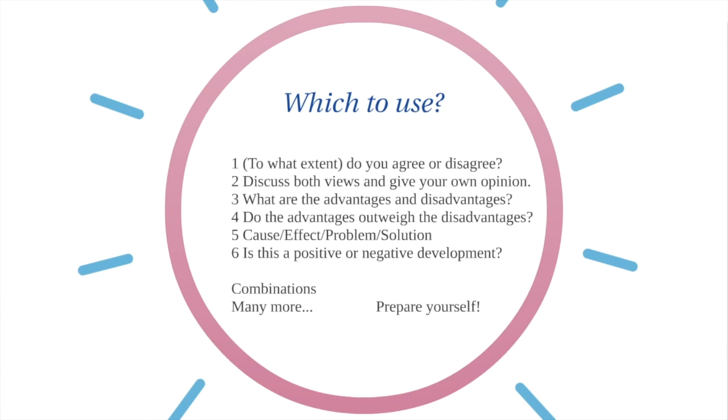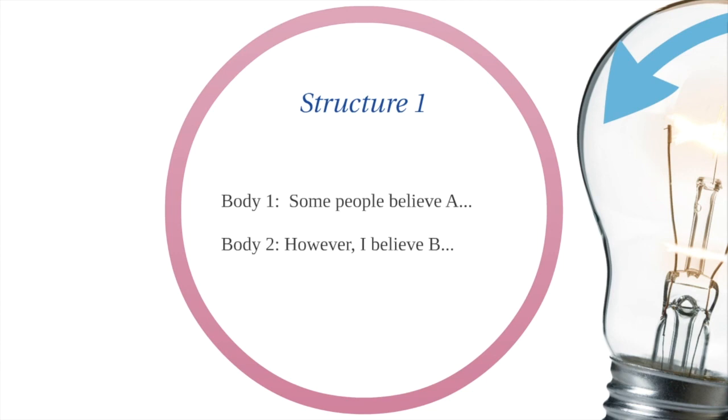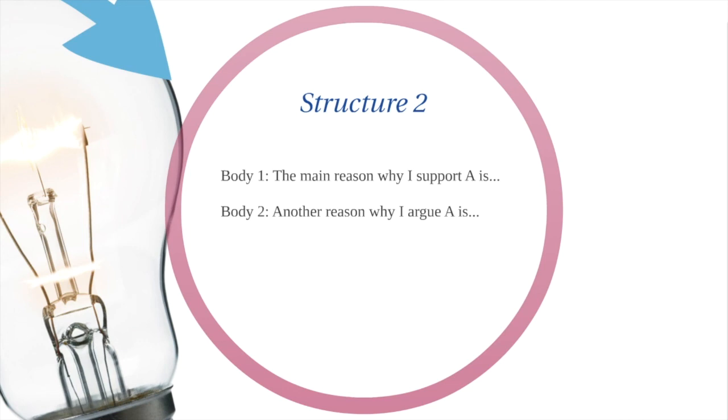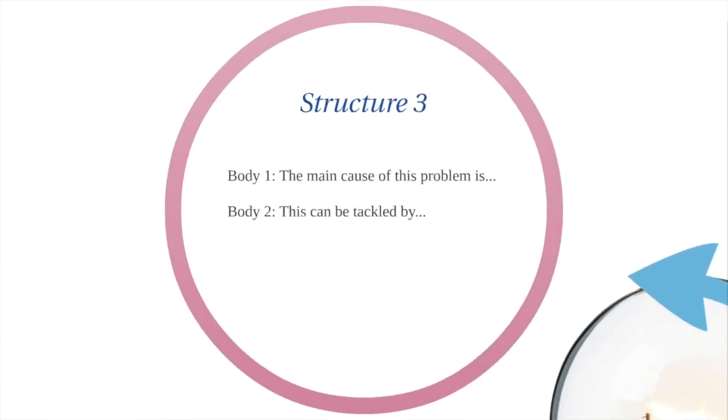So if you look at the structures: Some people believe A, however I believe B - for example, this is for discuss both views type questions, where some people say A and others say B, and I support B. The second structure, the main reason why I support A, another reason - both body paragraphs support A, so perhaps this is for to what extent do you agree or disagree, or do you agree or disagree type questions. Structure 3, the main cause of a problem, this can be tackled by - if you're studying essay writing, you should know this is for cause and solution type essays.